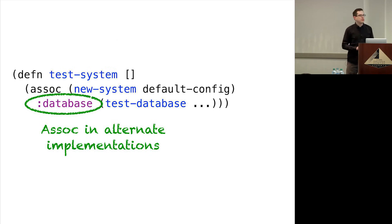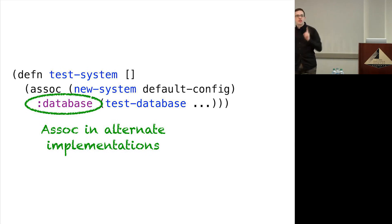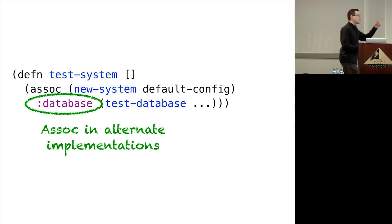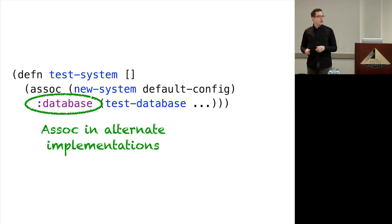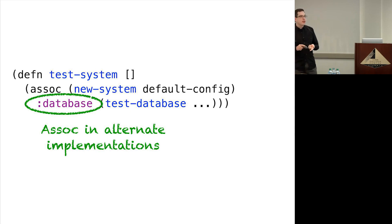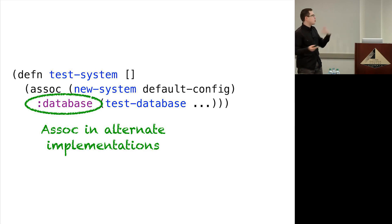There are lots of neat things you can do with this. One is you can create alternate versions of your system and inject different versions of components. Remember, the system is just a map — or a record that behaves like a map. So if I want to inject a different version of some dependency, all I have to do is call assoc before I call start. And to answer the earlier question about name duplication: the keys in this map could be ordinary keywords, namespace-qualified keywords, or really any data structure. So if you have two different pieces of code creating components with similar names, you can use namespace-qualified keys.